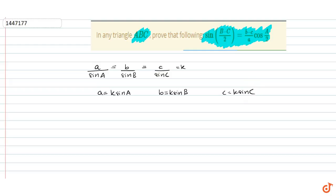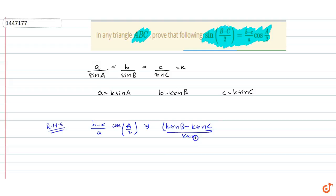Now let's look at the right hand side which we need to prove: (b-c)/a into cos(a/2). Substituting the values, we get (k·sin B - k·sin C) upon (k·sin A) into cos(a/2). Dividing by k,